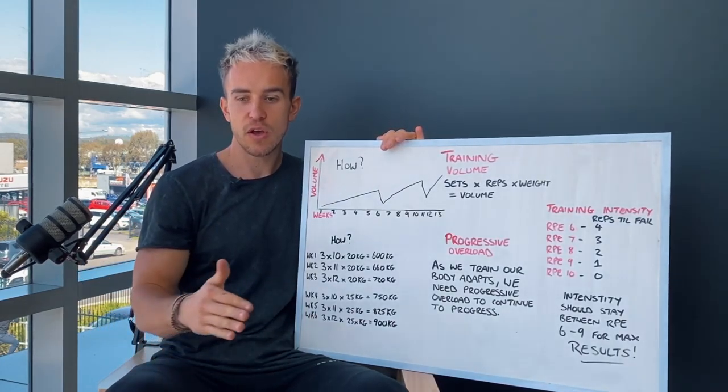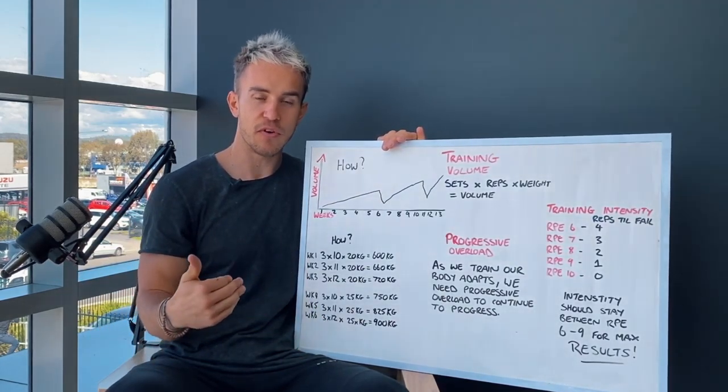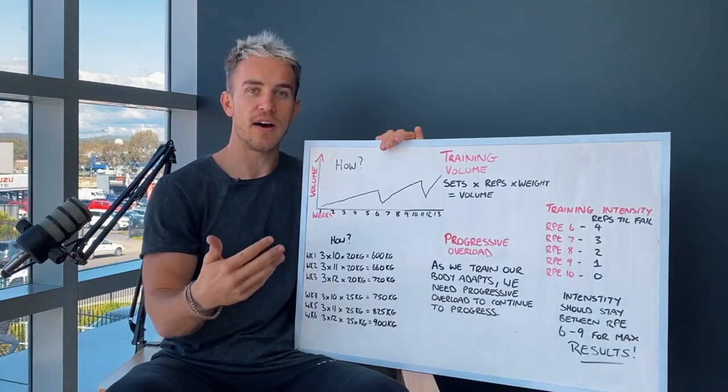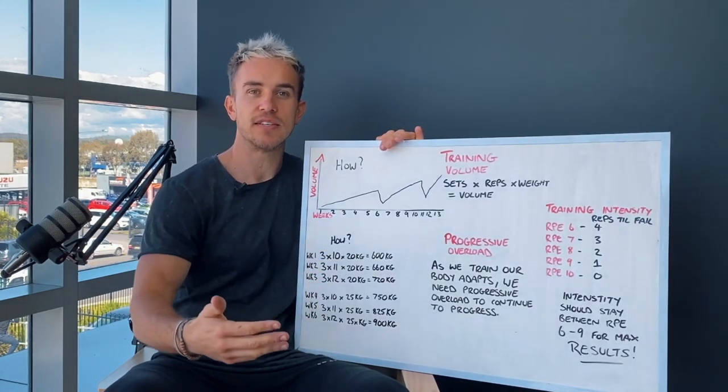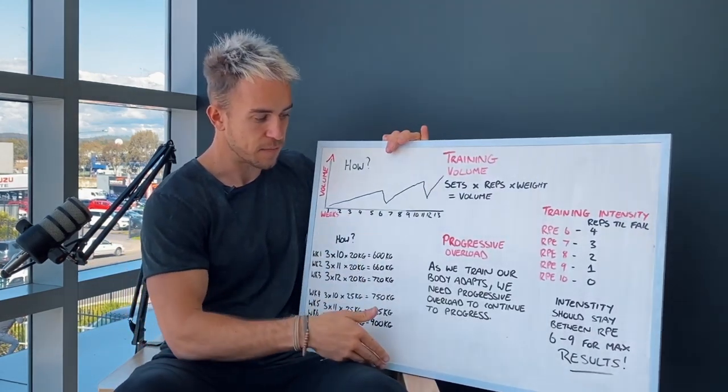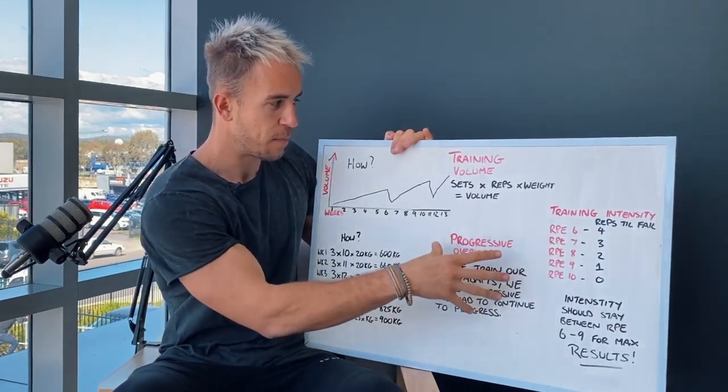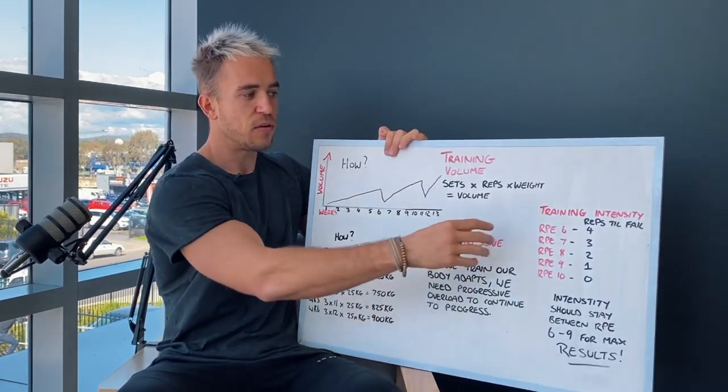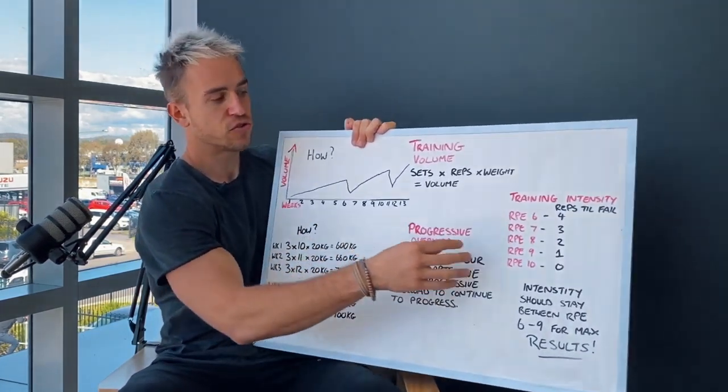Or as you keep progressing, we now go into a deficit reverse lunge, but it's now a one and a half. You know, we're looking at increasing our training volume over time. So that's how progressive overload works.